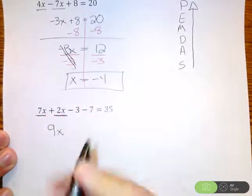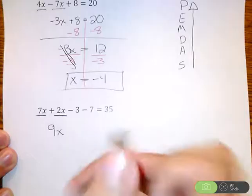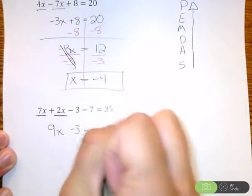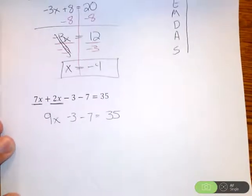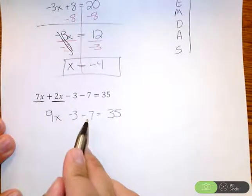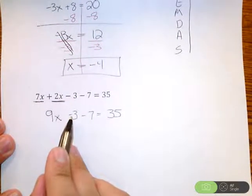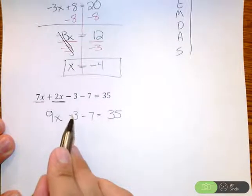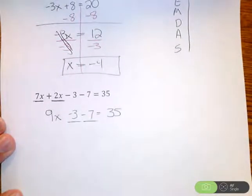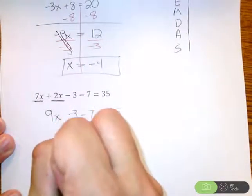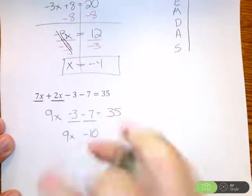7 plus 2 is 9. Still have that x hanging out. Don't forget that x. It's still with it. I have a minus 3 here, have a minus 7, equals 35. I'm almost there. If you look, I also have some integers here that can combine. I have a negative 3 minus 7. I can combine these two. Use a calculator if you need help there. You're going to get a negative 10.